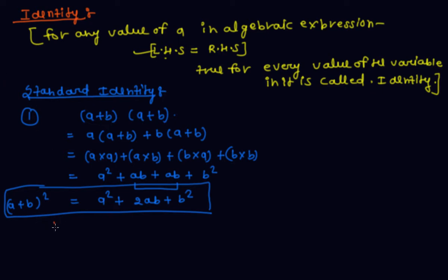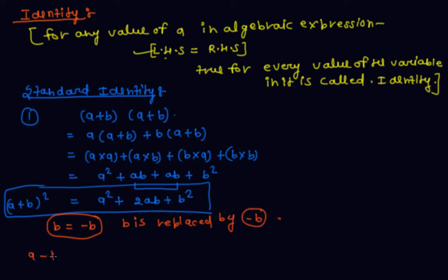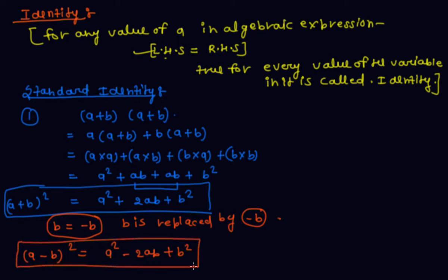If we replace B with minus B in the first identity, we get the second standard identity: (A − B)² = A² − 2AB + B². This is the second standard identity, which is true for every value of the variable.